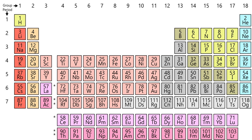The elements generally classified as nonmetals include one element in group 1, hydrogen; one in group 14, carbon; two in group 15, nitrogen and phosphorus; three in group 16, oxygen, sulfur, and selenium; most of group 17, fluorine, chlorine, bromine, and iodine; and all of group 18, with the possible exception of oganesson.